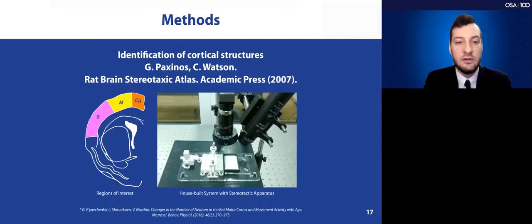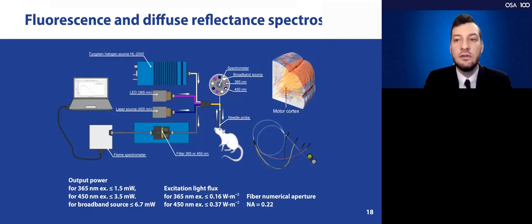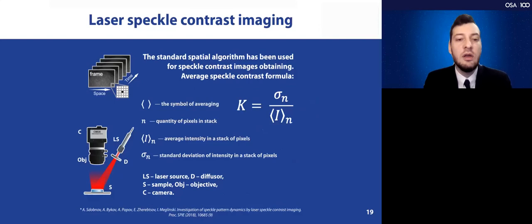We used a house-built system with stereotaxic apparatus and used the Paxinos and Watson rat brain stereotaxic atlas for the identification of cortical structures. Here is the scheme for fluorescence and diffuse-reflectance spectroscopy. Here is the halogen source with LED lamp and laser source with the fiber needle probe with a spectrometer board source and two sources for LED and laser source. For the laser speckle contrast imaging, there is the scheme of the system which we used. The special algorithm has been used for speckle contrast imaging obtaining and the averaging speckle contrast formula which is given in this slide.